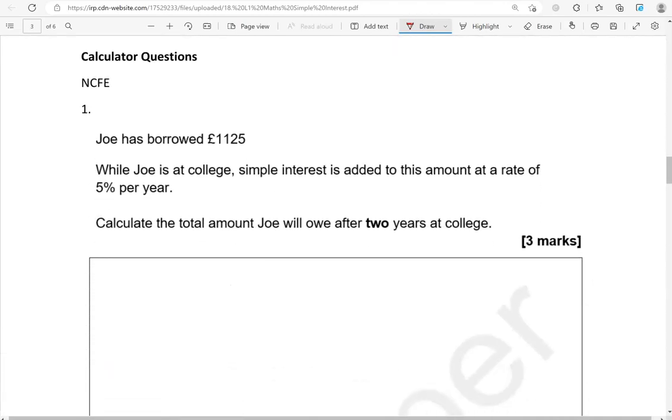Now we're moving to the calculator questions. Joe has borrowed 1,125 pounds. While Joe is at college, simple interest is added to this amount at a rate of 5% per year. Calculate the total amount Joe will owe after 2 years at college. So the rate is 5% per year. As this is simple interest over 2 years, that will be 5 and 5%, which is 10% of the amount.